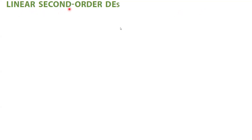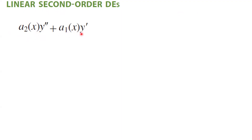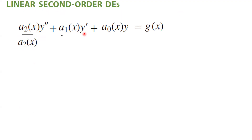I'm supposed to solve a linear second-order differential equation which is not in homogeneous form. So suppose a sub 2 of x times the second derivative of y, plus a sub 1 of x times y prime, plus a sub 0 of x times y is equal to a function g of x. What are we going to do? We're going to write it in standard form by dividing everything by a sub 2 of x.